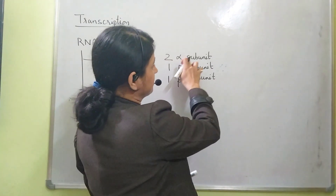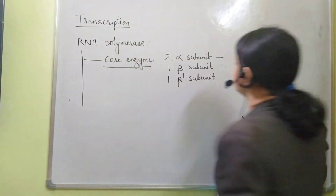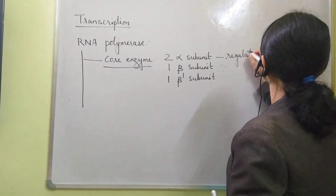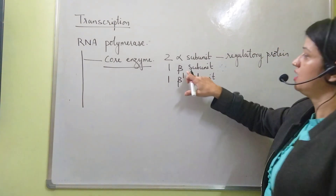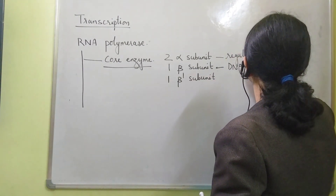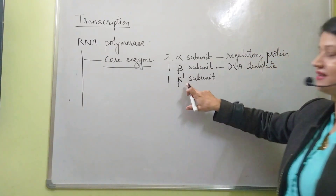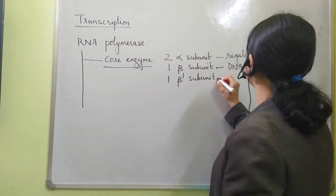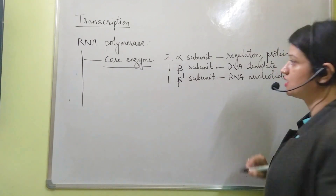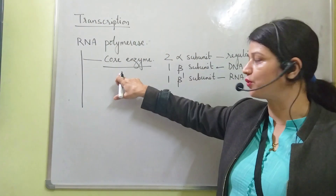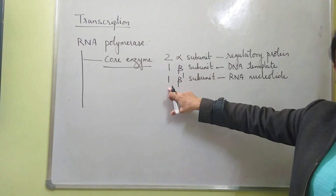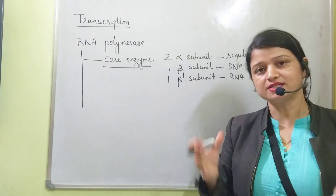The alpha subunit is required to bind regulatory proteins. The beta subunit is required to bind to the DNA template. The core enzyme is made up of two alpha subunits, one beta subunit, and one beta-dash subunit, which are always present together.